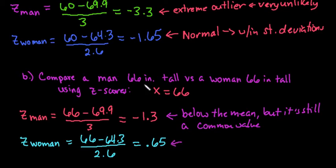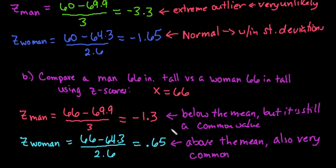A woman that is 66 inches tall is above the mean, so this would be above the average. And this is also very common because it's less than one standard deviation away. It's very, very common to happen. The closer it is to the mean, the closer this is to zero, the means more common than it is. The further away from zero it is, the more uncommon that it is.